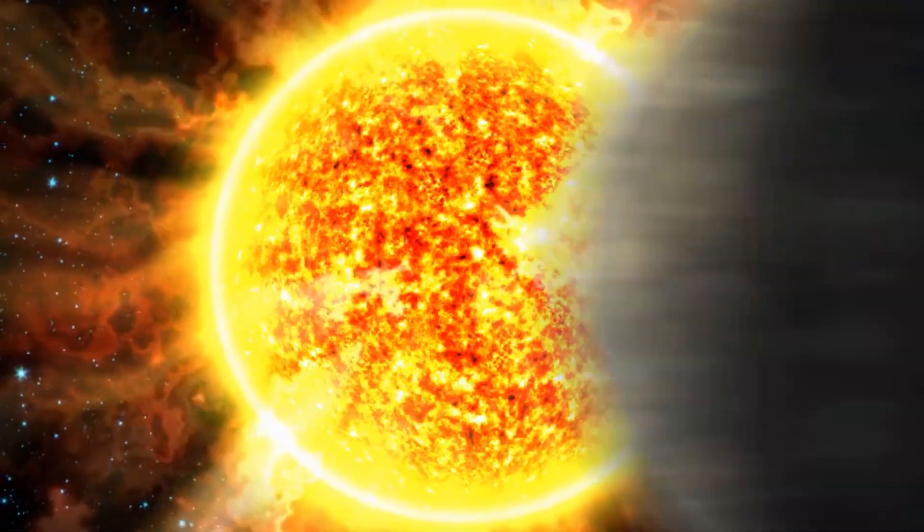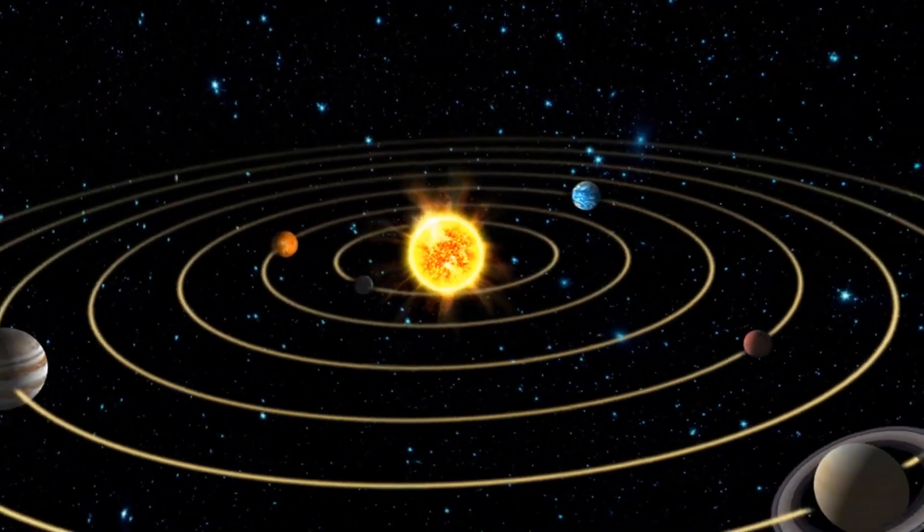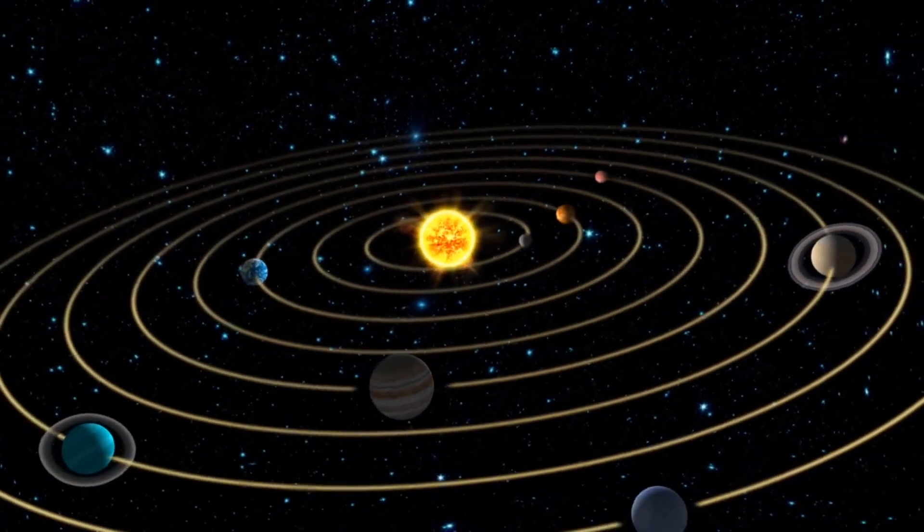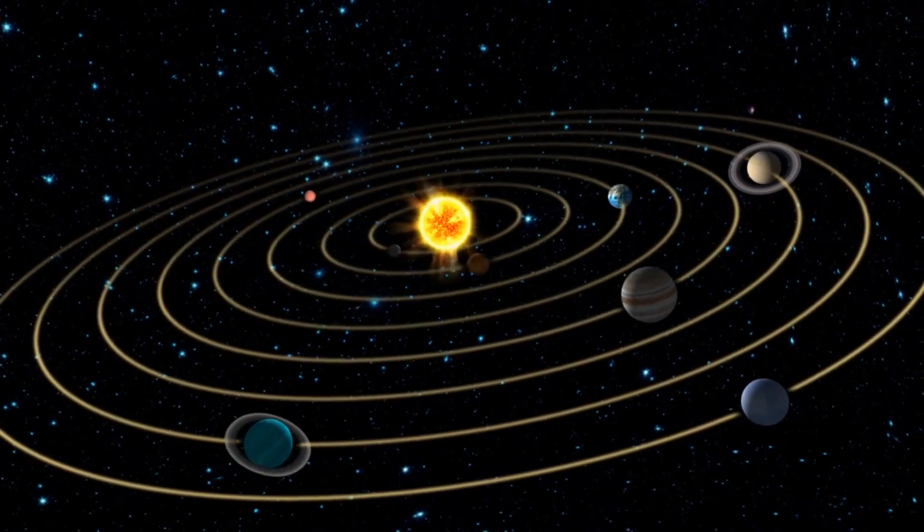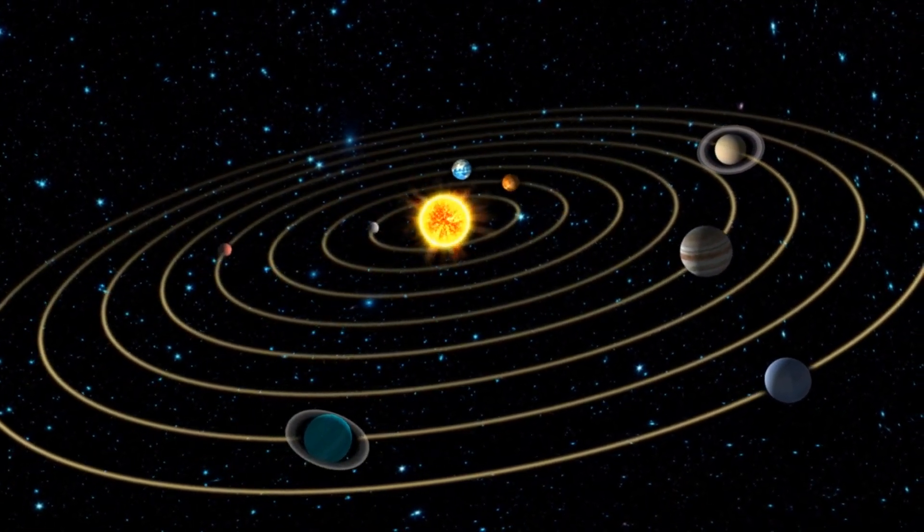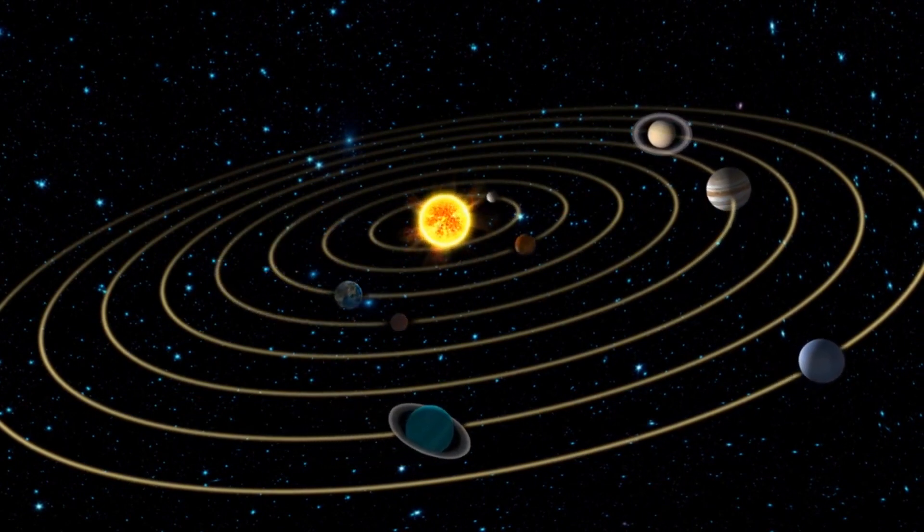For the forecast, solar activity is expected to remain low with the possibility of M-class flares on the 23rd through 25th of July. However, chances of M-class activity are expected to decrease on the 25th of July as Region 3372 rotates around the northwest limb.